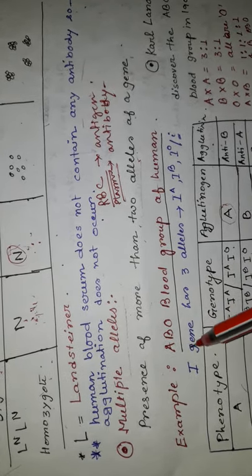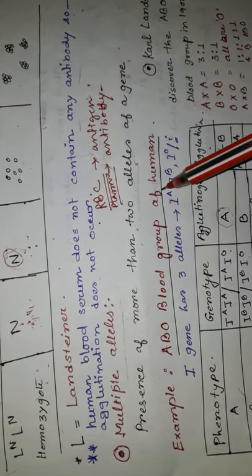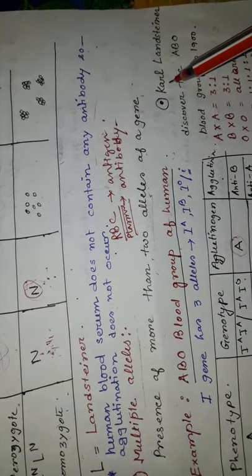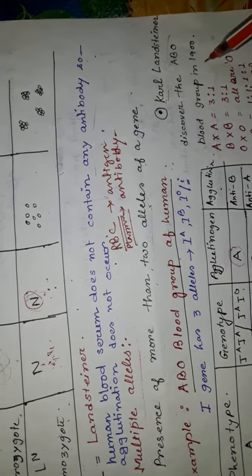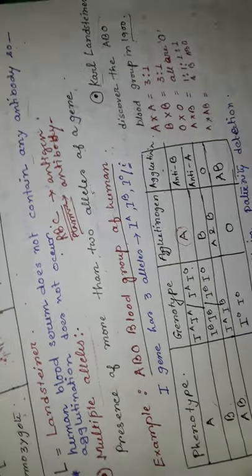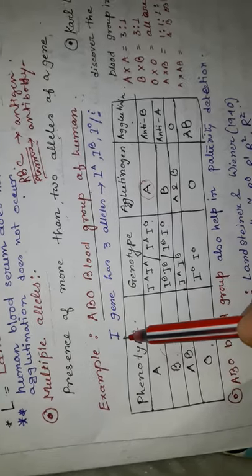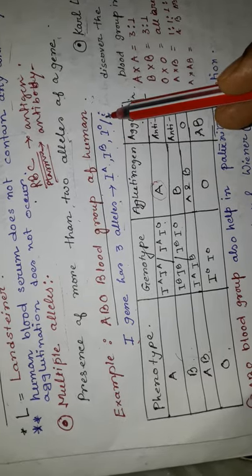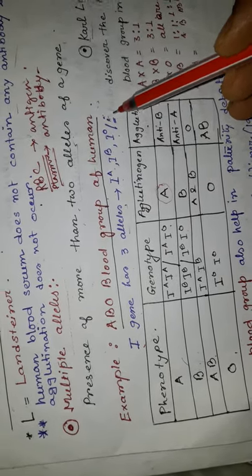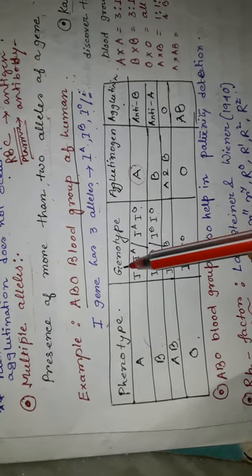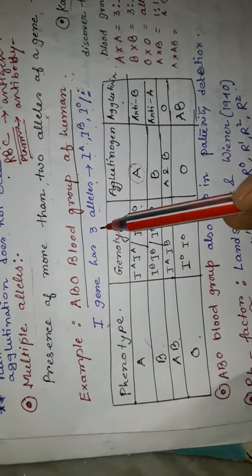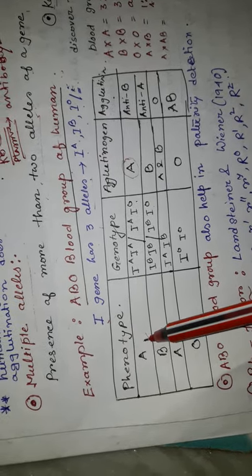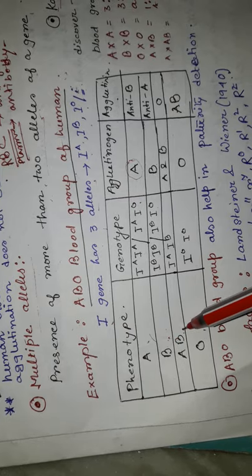Multiple alleles are found in human blood group — the ABO blood group. This blood group system was discovered by Karl Landsteiner in 1900. Here, the I gene has three alleles: IA, IB, and I0 (denoted as small i). On the basis of this blood group, the human population is divided into four groups: A, B, AB, and O.